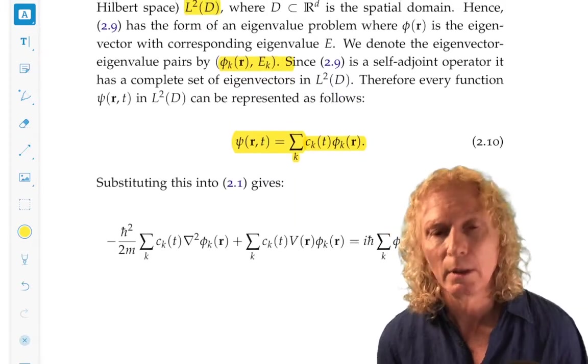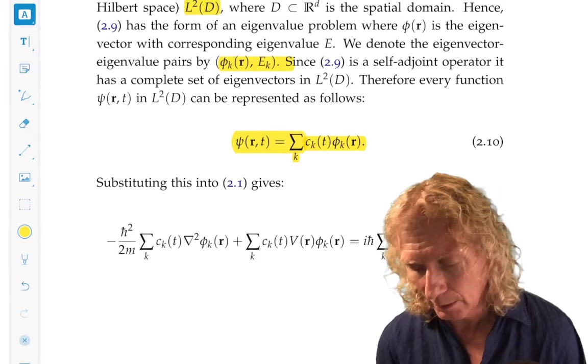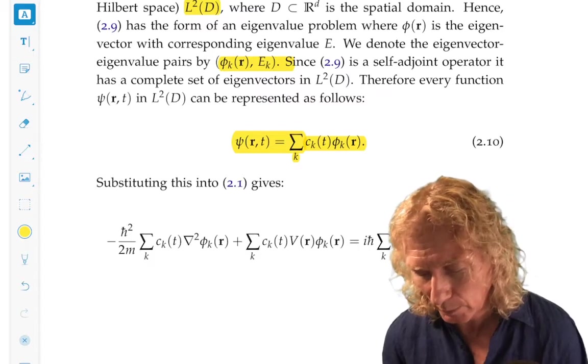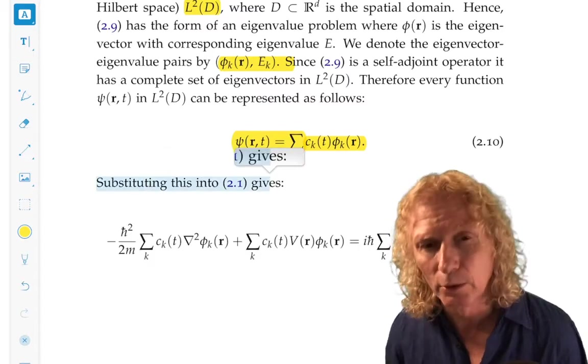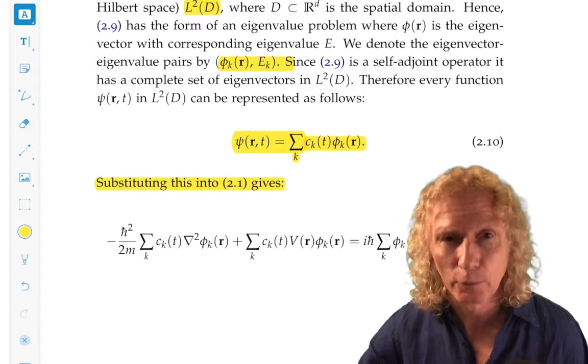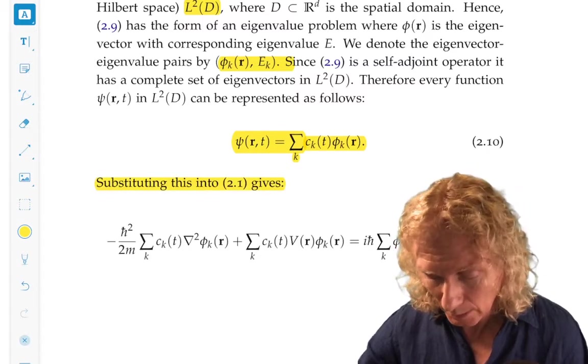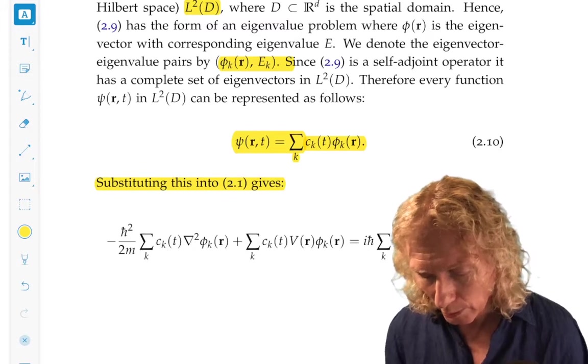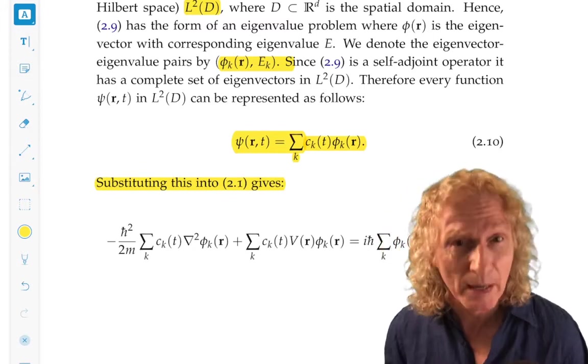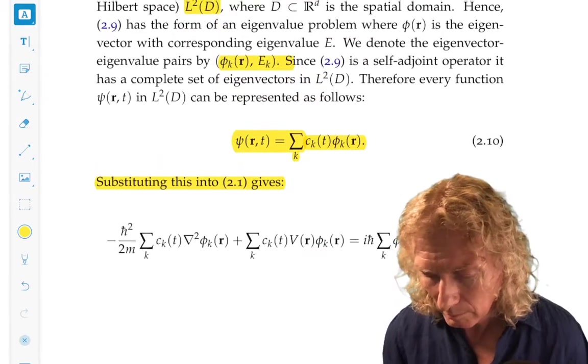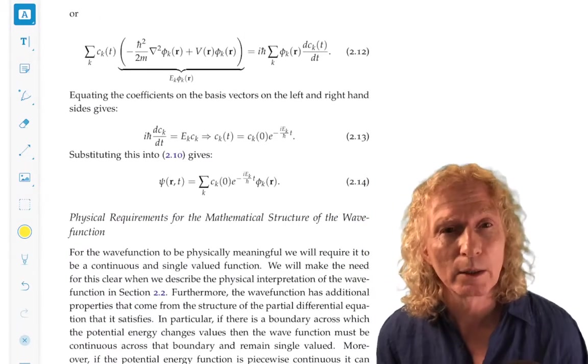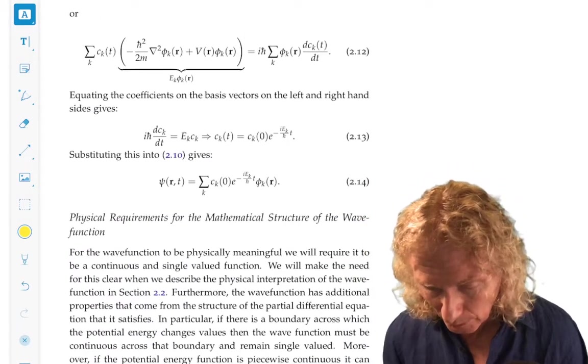Now, what we're going to do is express this, get a cleaner expression for this. We're going to substitute it into the equation, the fully time-dependent Schrödinger equation. We're going to collect together terms on the different basis elements, φₖ, equate the coefficients on the different basis elements.